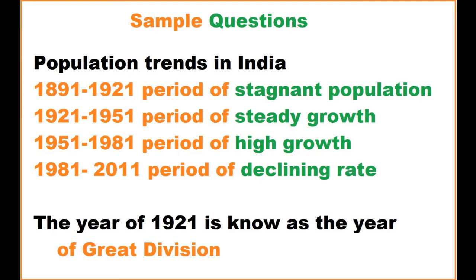The year 1921 is known as the year of the Great Division. This is a likely exam question — which year would be called the Great Division? The answer is 1921.